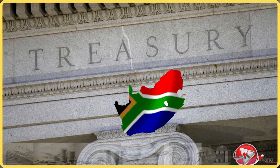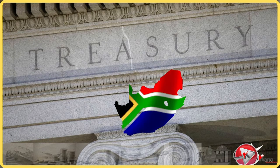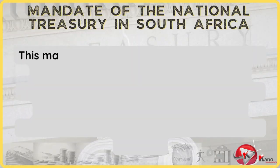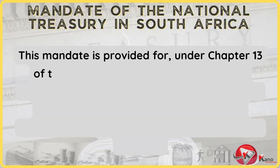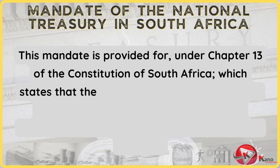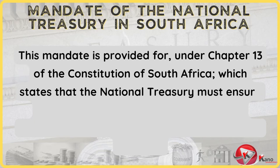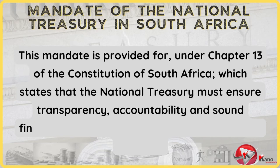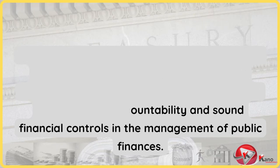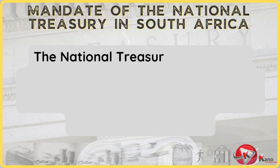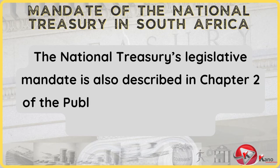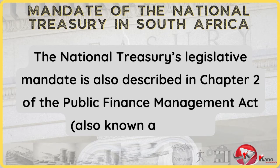In South Africa, the National Treasury is tasked with the mandate of managing the finances of the South African National Government. This mandate is provided for under Chapter 13 of the Constitution of South Africa, which states that the National Treasury must ensure transparency, accountability, and sound financial controls in the management of public finances. The National Treasury's legislative mandate is also prescribed in Chapter 2 of the Public Finance Management Act, also known as the PFMA.